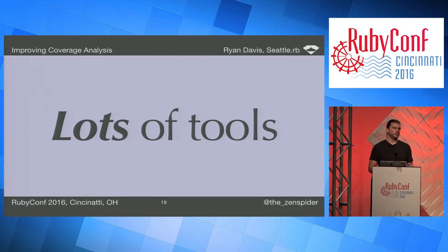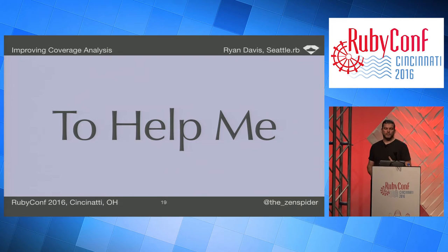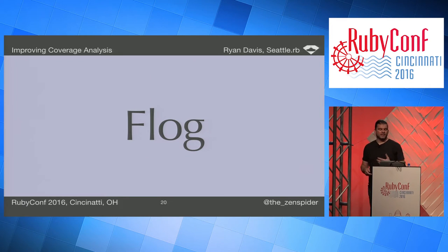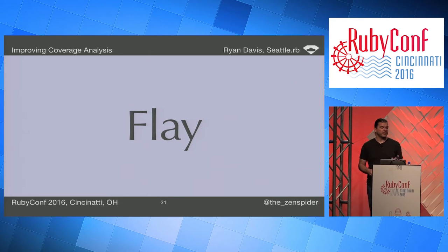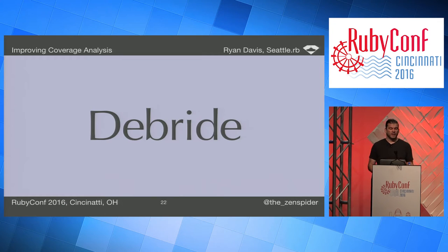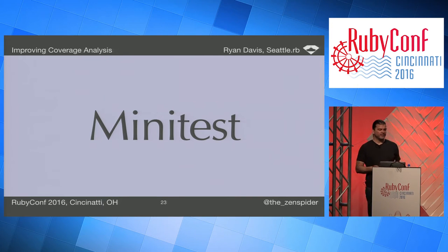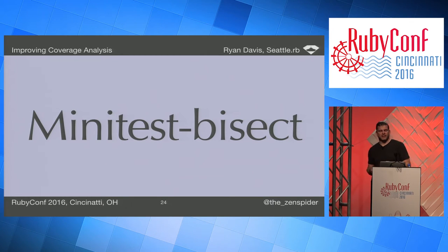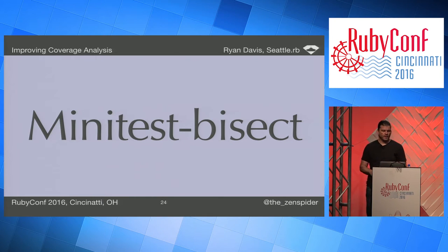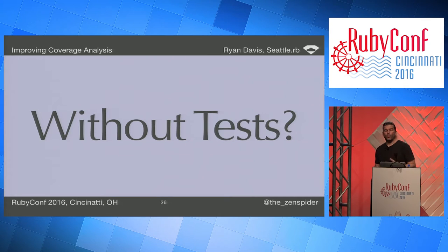Being a tool builder, I have a load of tools to help me do my work. Flog points out where the complexity lies and lets me hone in on bad code quickly. Flay points out refactoring opportunities. Debride points out whole methods that might not be used anymore and helps me delete entire fields of code. Minitest lets me write fast, clean tests and provides extra plugins — including minitest bisect, which makes it fast and easy to find and fix unstable tests.